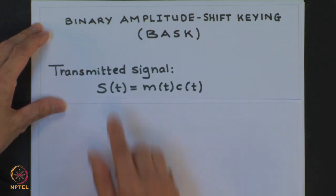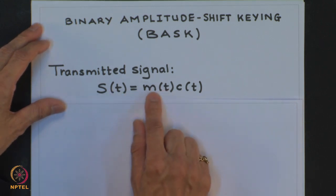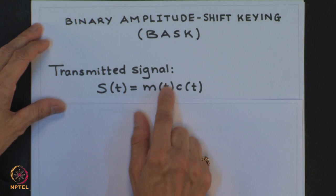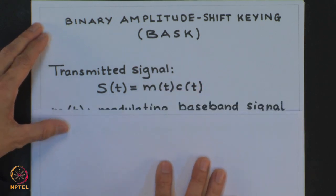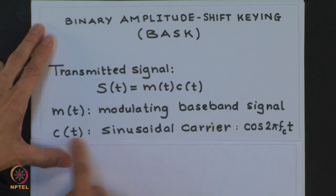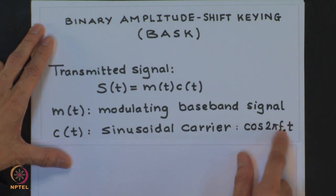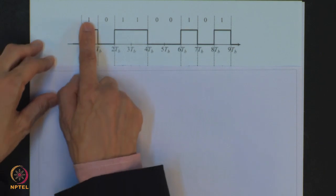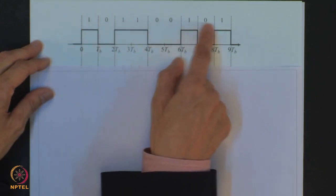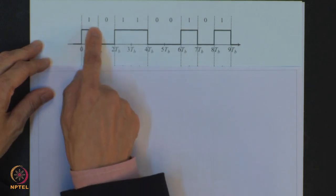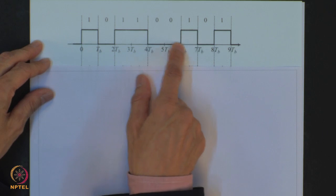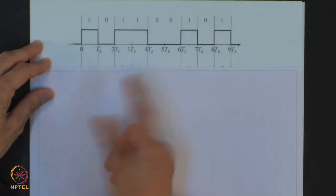We will denote the transmitted signal S(T) as the product of modulating signal M(T) and C(T), the carrier. M(T) is the modulating baseband signal and C(T) is the sinusoidal carrier in the form of cos(2π·F_C·T), where F_C is the carrier frequency. Let me show you the waveform for such a modulation scheme. Let us assume that we have binary data in the form of 101100101 and it has been converted to a line code using a unipolar scheme.